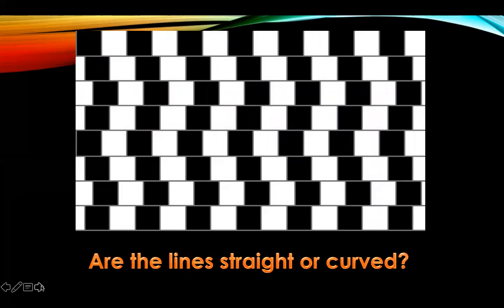Are the lines in this image straight or curved? If you said straight, you are correct. They are absolutely straight. It's just the placement of the black and white squares, the way that they're staggered, that give the illusion that these lines are not straight at all.